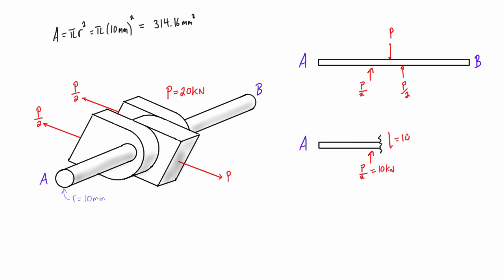going to be equal to 10 kilonewtons going in the opposite direction. Now for the average shearing stress, we basically just take this shear stress and distribute it across the entire cross-sectional area of the member. And in this case, the cross-sectional area of the member was 314.16 millimeters squared. So let's go and write